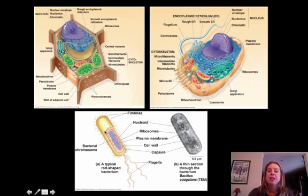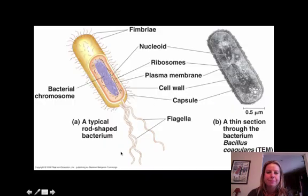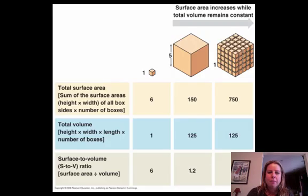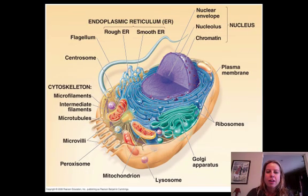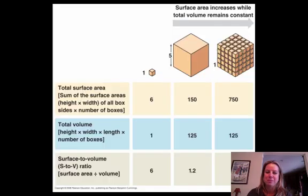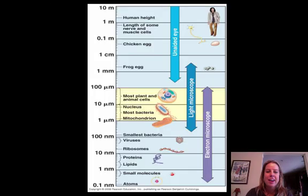Here are pictures to show you what it all looks like. First, here are eukaryotic cells — you can see they're bigger and more complex, with organelles in them. And here's a bacteria cell: no organelles, just very simple. The purple stuff in the middle is just the DNA.